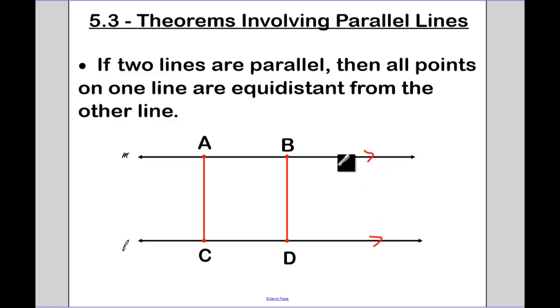Then all points on one line are equidistant, remembering that means the perpendicular distance from the other line. So that means that if M is parallel to L, then if I have a right angle there, the distance, which is AC, is going to be equal to the distance, which is BD.